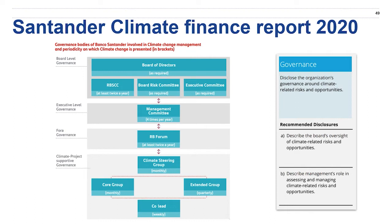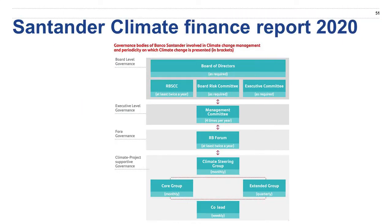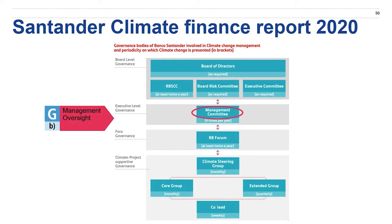Just to go through a few of the best practices you might have seen in Santander's excerpt. The first is that they note in their diagram what the management oversight is. You can see that they put under the board of directors who is responsible for climate, and then the management committee at the executive level, and so on below.